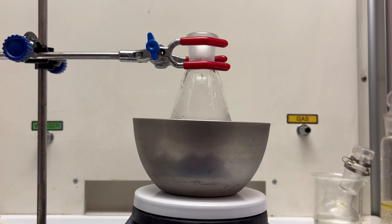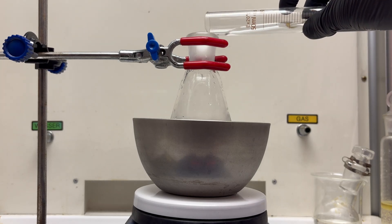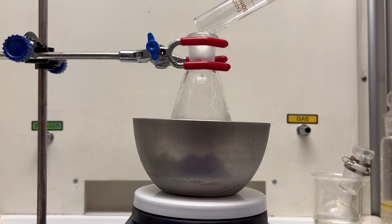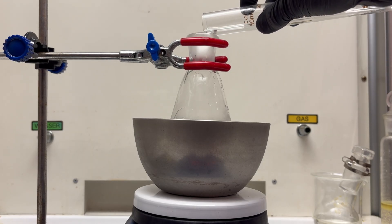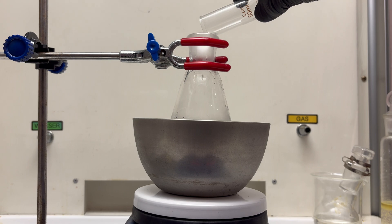First, to a flask there was added 18 milliliters of distilled water as a solvent. Then I'll add 32 milliliters of concentrated hydrochloric acid.